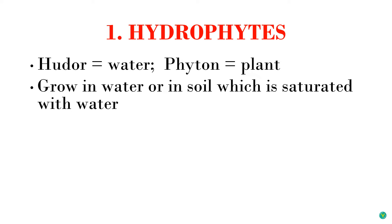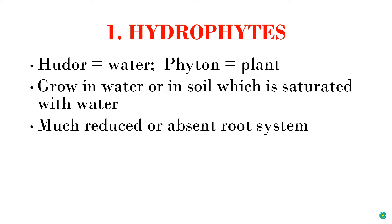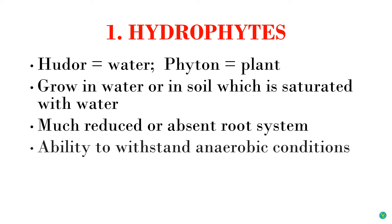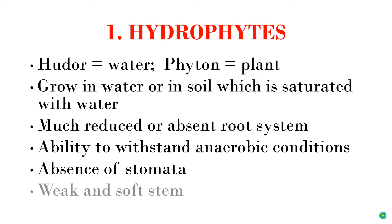The water can be fresh or saline. Hydrophytes have either poorly developed root systems or sometimes no root system at all. They can withstand the absence of oxygen, that is anaerobic conditions. Stomata are absent in these plants and the stems are soft and usually weak. Stomata are minute pores present on leaves or stems that help in exchange of carbon dioxide and water between plants and the atmosphere.